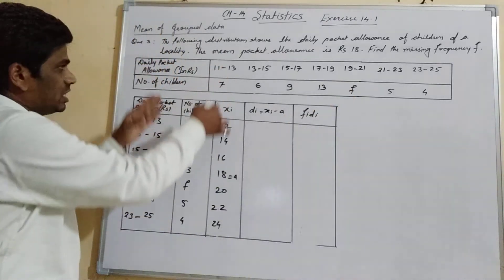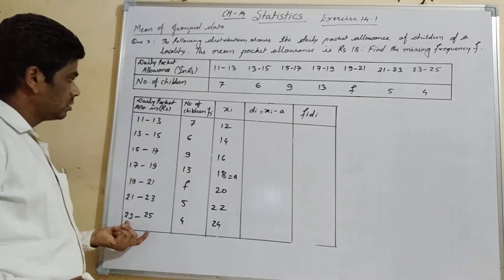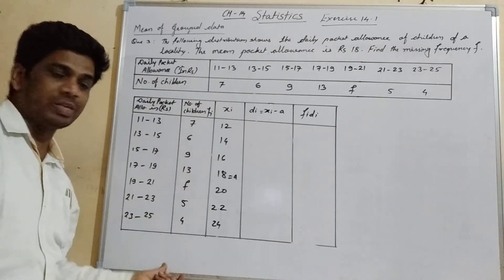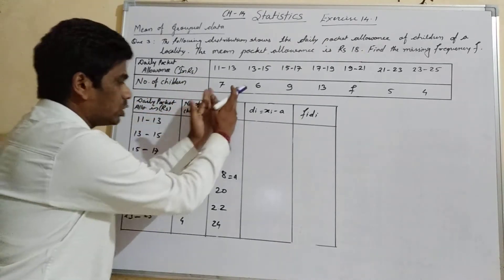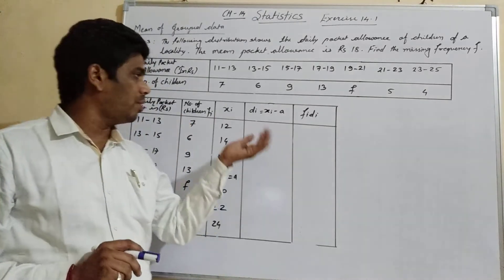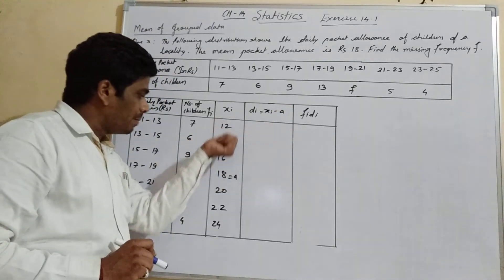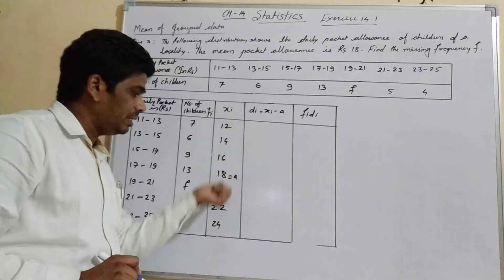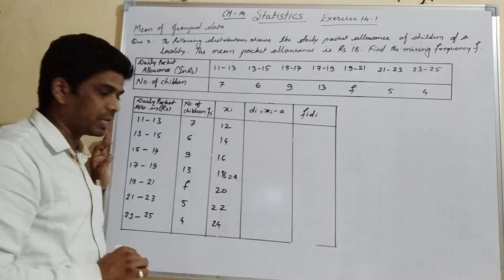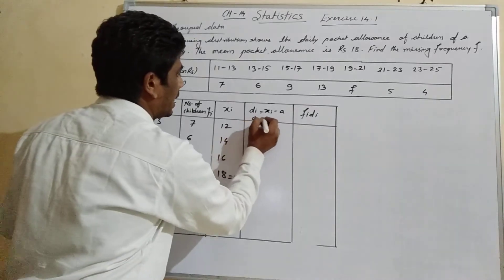We will arrange the data in tabular form. The columns will be: pocket allowance, number of children (frequency), and the midpoint xi. We will use the assumed mean method. Since an odd number of observations are given, the exactly middle xi value is 18, so we take a = 18.